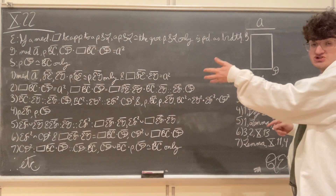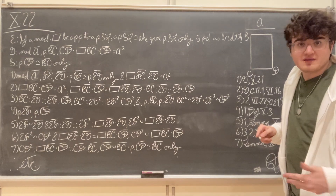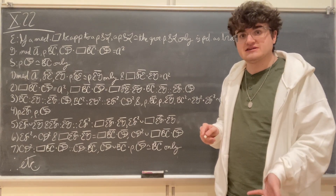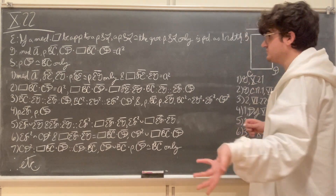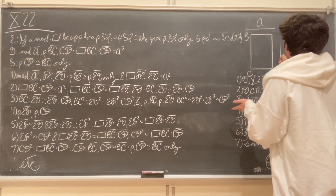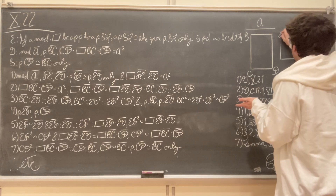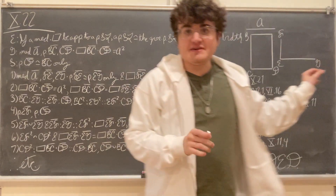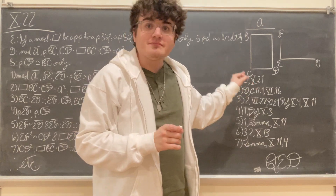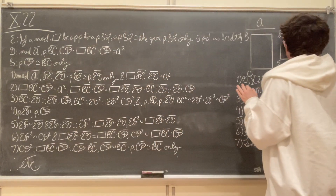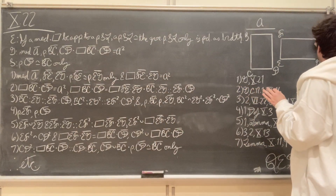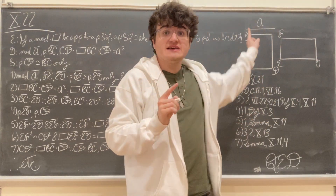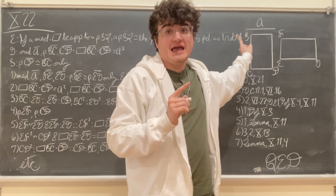Because the straight line A being medial implies the existence of two such straight lines, let us set out two such straight lines FE and EG, such that they are both rational straight lines, they are commensurable in square only, and such that the rectangle contained by them is equal to the square on A.